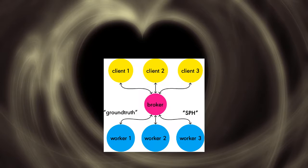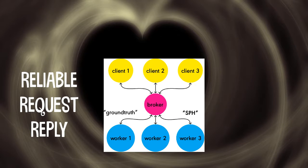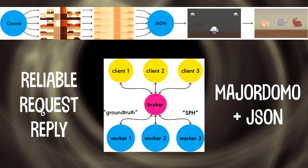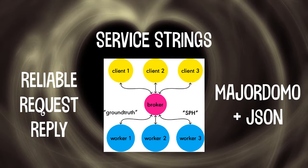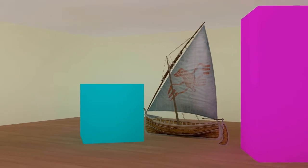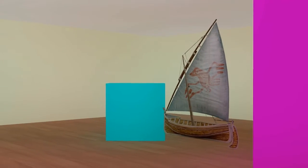We needed a reliable request-reply message system to render light probes and reference images with external worker nodes. So we implemented the Majordomo protocol with 0MQ. Worker nodes offer services and the broker relays them tasks identified by a service string. Now we want to simulate global illumination in this scene with spherical harmonic lights.